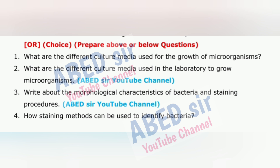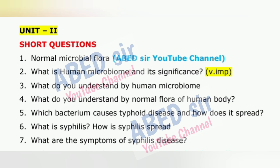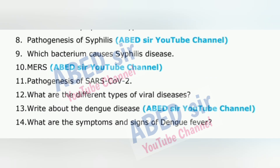Here are some smart writing tips to follow in the exam hall. First, read the question paper carefully and calmly. Second, do not write anything on the question paper except your hall ticket number. Third, begin your answers with the question you know best — this builds confidence and creates a good impression.